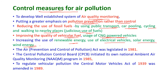Government of India initiatives to control air pollution: the Air Prevention and Control of Pollution Act was legislated in 1981. The Central Pollution Control Board initiated its National Ambient Air Quality Monitoring Program in 1985. To regulate vehicle pollution, the Central Motor Vehicles Act of 1939 was amended again in 1989.